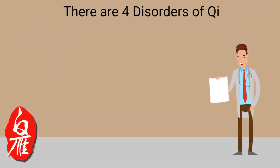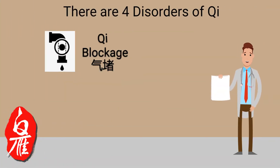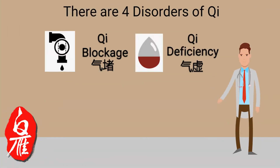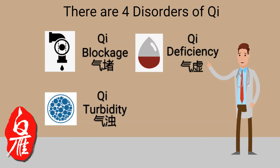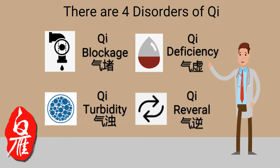There are four disorders of Qi: Qi blockage, Qi deficiency, Qi turbidity, and Qi reversal.